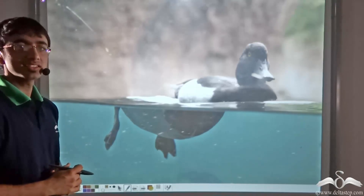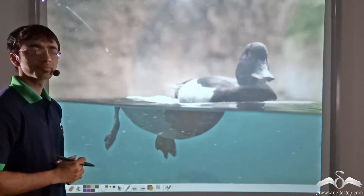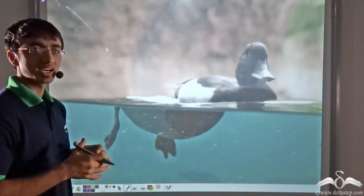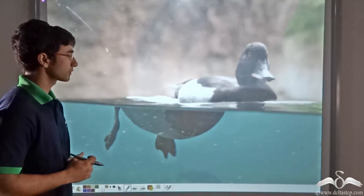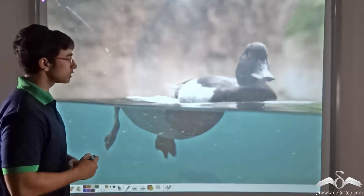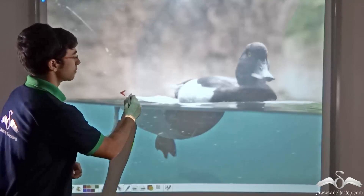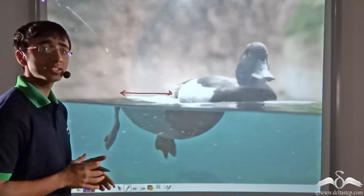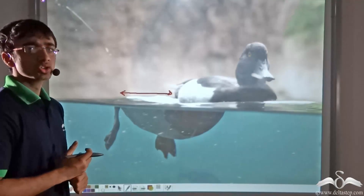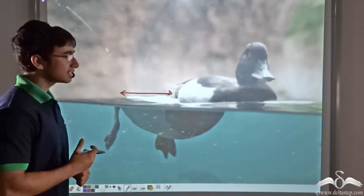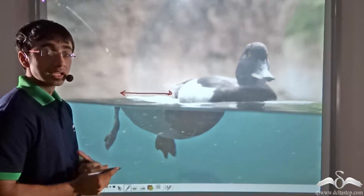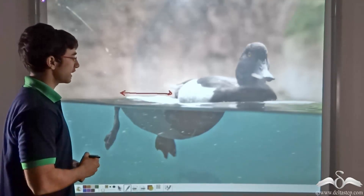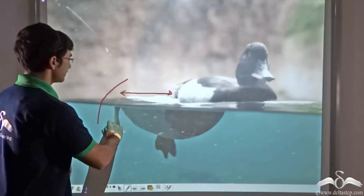Let us recapitulate the case of the magician and the duck. Do you recall what happened? The magician placed a duck on the surface of the water. The crowd observed that the duck appeared broken. But when the magician placed the duck back on land, the duck appeared perfectly fine. Why does the body of the duck appear broken? The body of the duck was appearing broken due to the bending or refraction of light at the water-air interface.